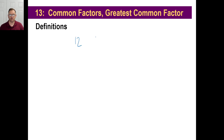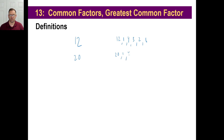Let's say 12. What are some factors of 12? We got 12 and 1, we got 4 and 3, we got 2 and 6, and so on. Let's say we have something like 20. Factors are 20 and 1, and then 4 and 5, and then we could say 10 and 2, things like that.